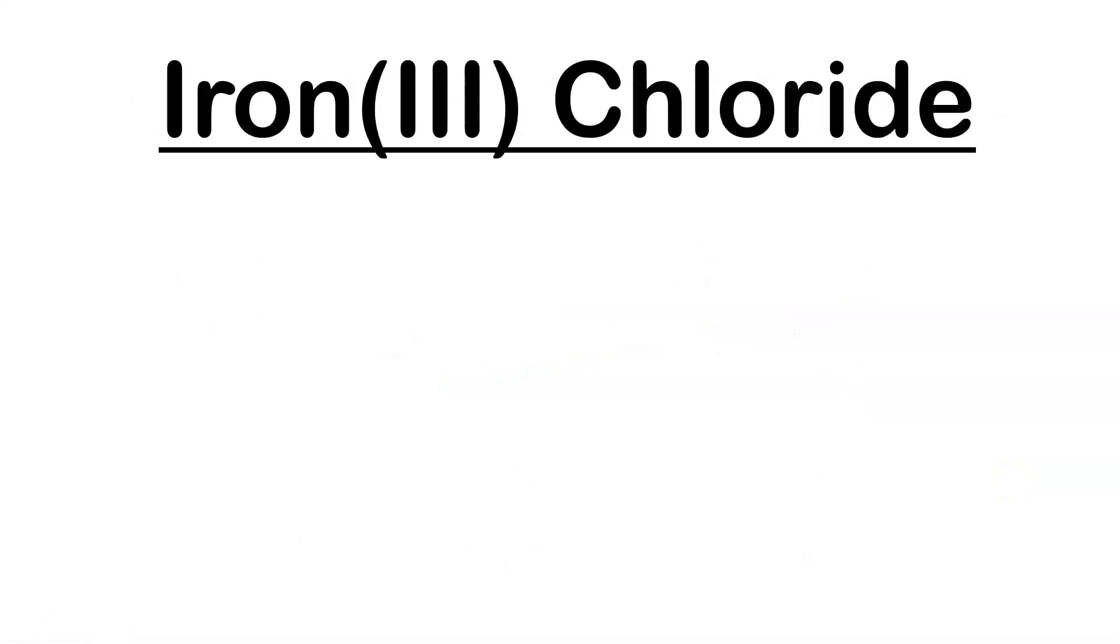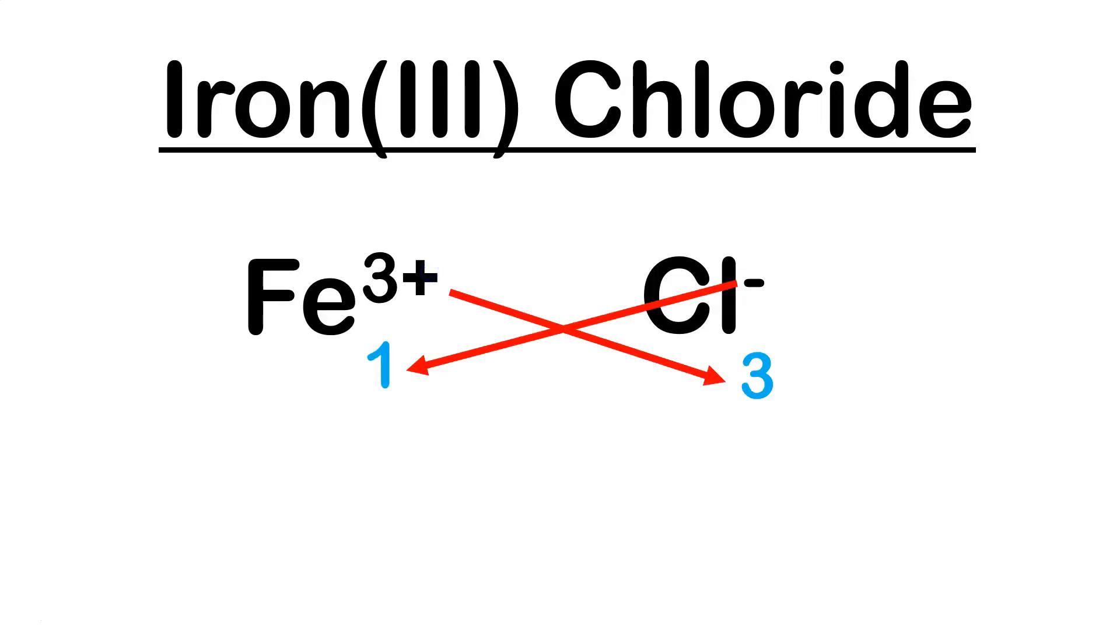When you have Roman numerals, remember the Roman numeral is telling you the charge on your transition metal. So if you have iron three chloride, that's telling you that iron has a plus three. You know it's plus because it's a metal. It's going to be a cation. Chlorine is a minus one. I know that from my periodic table. It's in that column where fluorine is. That's a minus one column. The three comes down. The one comes down. My formula is FeCl3.